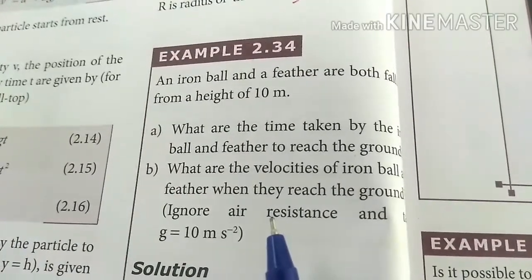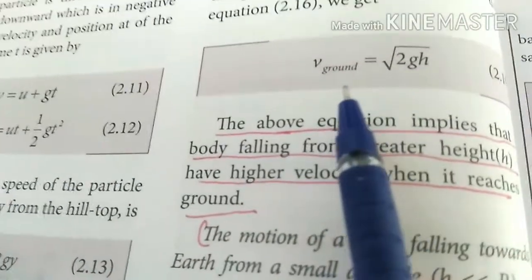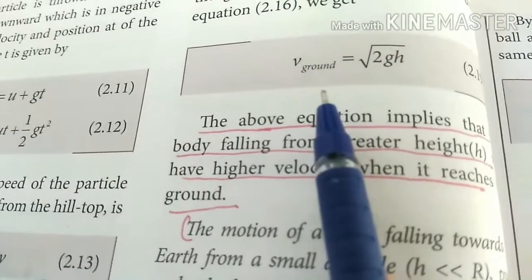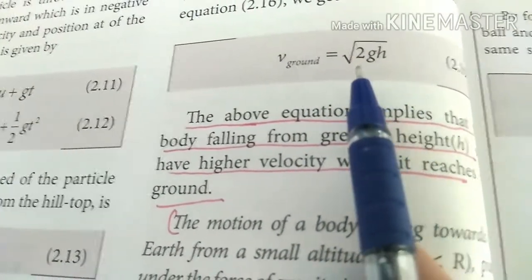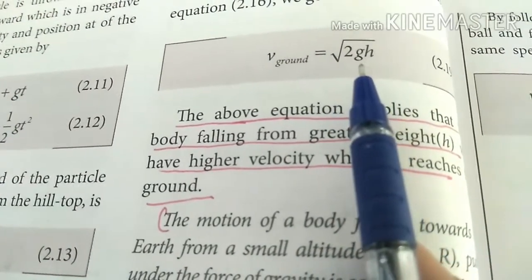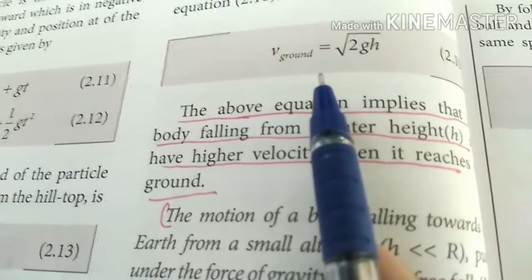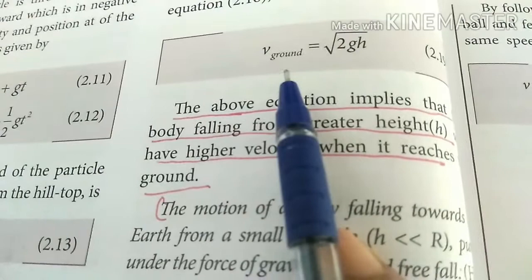What are the velocity of the iron ball when they reach the ground? Use this formula. Ground velocity iron ball strike the ground equal to root of 2gh. Here also there is no mass term included in the equation, so both iron ball and feather reach with same velocity.